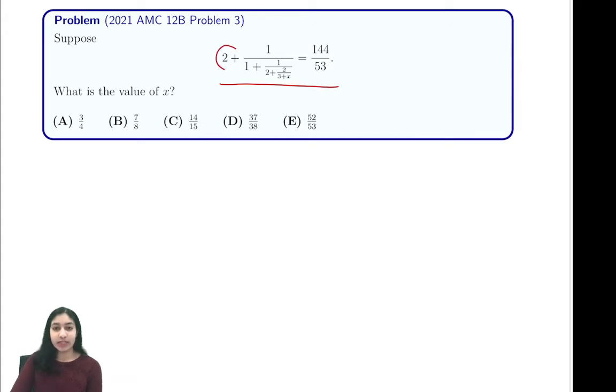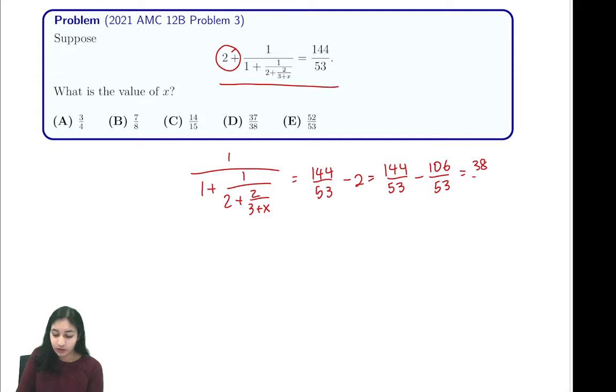We start by wanting to get rid of this 2, so we subtract 2 from both sides. That gives us 1 over 1 plus 1 over 2 plus 2 over 3 plus x equals 144 over 53 minus 2. 2 is simply 106 over 53, so this is 38 over 53.